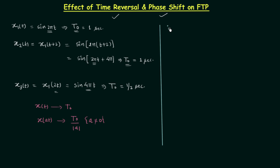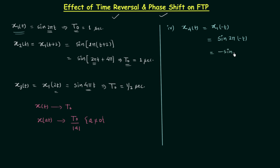Let's take the fourth signal x4(t), which is equal to x1(−t). We are performing the time reversal here. x4(t) is a signal obtained after reversing the time of x1(t). Since x1(t) = sin(2πt), x1(−t) is simply equal to sin(−2πt). We already know that sin(−t) = −sin(t), so we can write this as −sin(2πt). In this, 2π is ω₀, the fundamental angular frequency, and we can calculate t₀ = 2π/ω₀ = 2π/2π = one second.